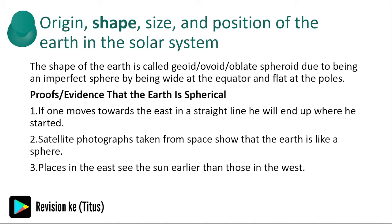The shape of the earth is called geoid, due to it being an imperfect sphere — wide at the equator and flat at the poles. Here are some of the proofs that render evidence that the earth is spherical.